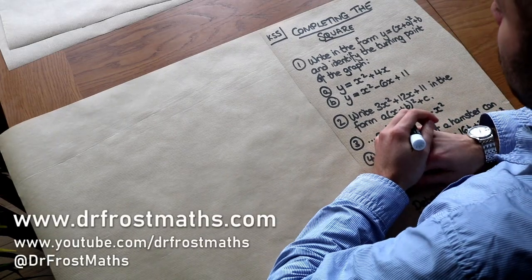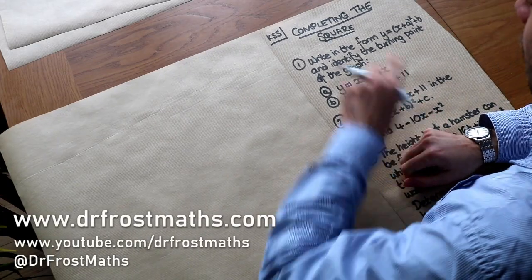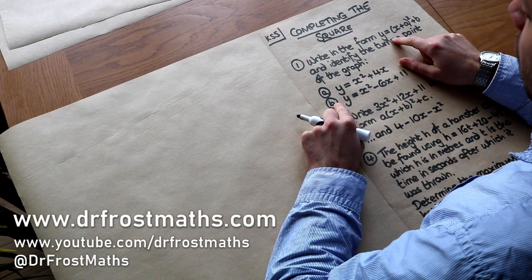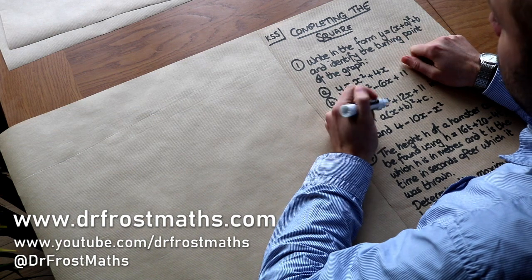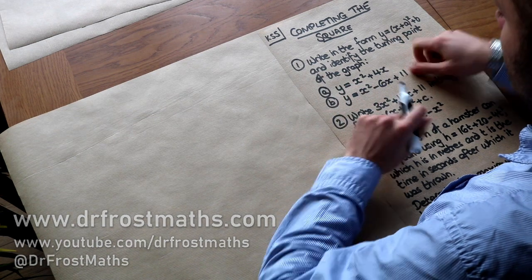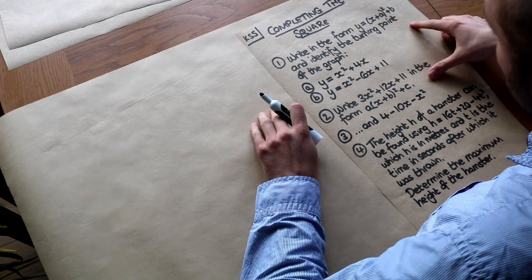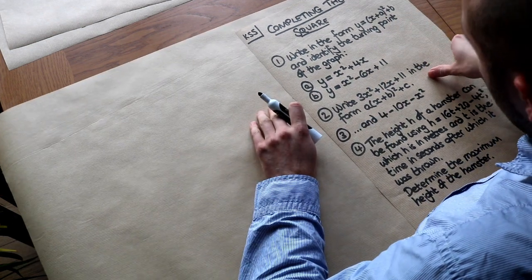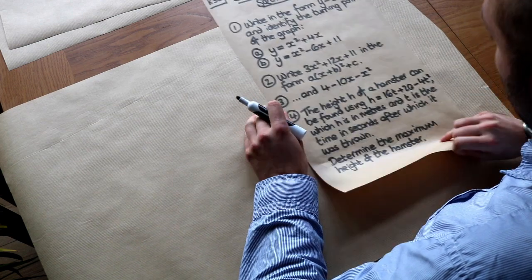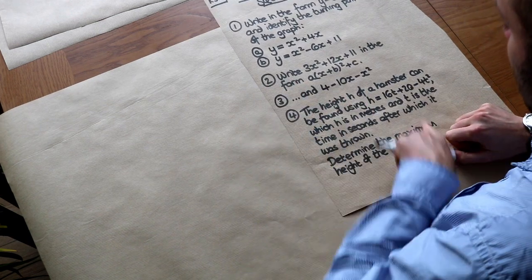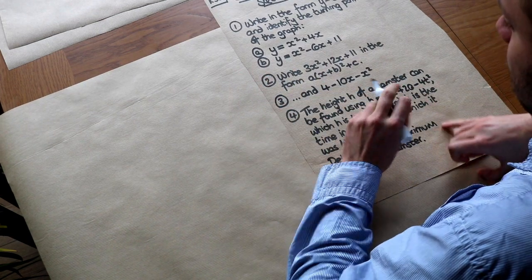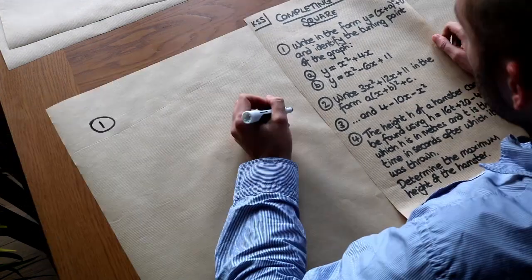Hello and welcome to this video on key stage 5 completing the square. Most of this is a recap of what you would have done at a younger age, but the particular emphasis at A-level is using completing the square in an applied context, like the maximum height of something.